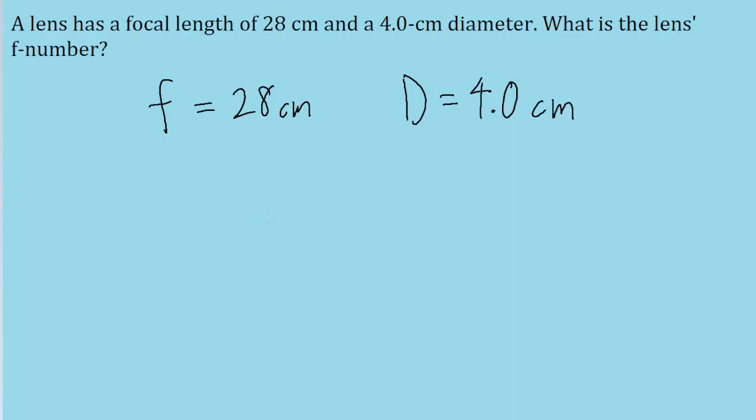This is a pretty simple problem for us because the f-number of a lens is quite simply defined to be the ratio of the focal length to the diameter of the lens.